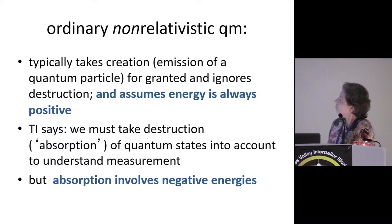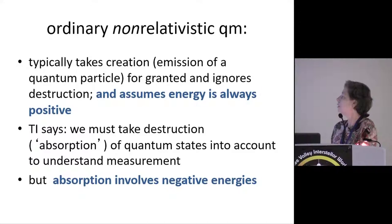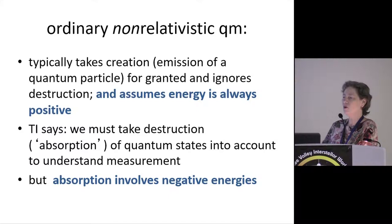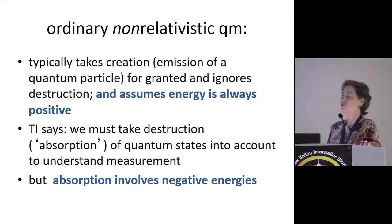Ordinary non-relativistic quantum mechanics typically just takes creation and emission for granted and ignores destruction of quantum states. It also assumes that energy is always positive. The transactional interpretation says we must take destruction or absorption of quantum states into account to understand measurement. But absorption involves negative energies — or more precisely at the relativistic level, what are called advanced states that seem to propagate backward in time. Often you can use negative energy and backward-in-time propagation interchangeably, though technically they are distinct. And the backward-in-time propagation is what makes a lot of people uncomfortable — it's one of the roadblocks to considering the transactional picture.